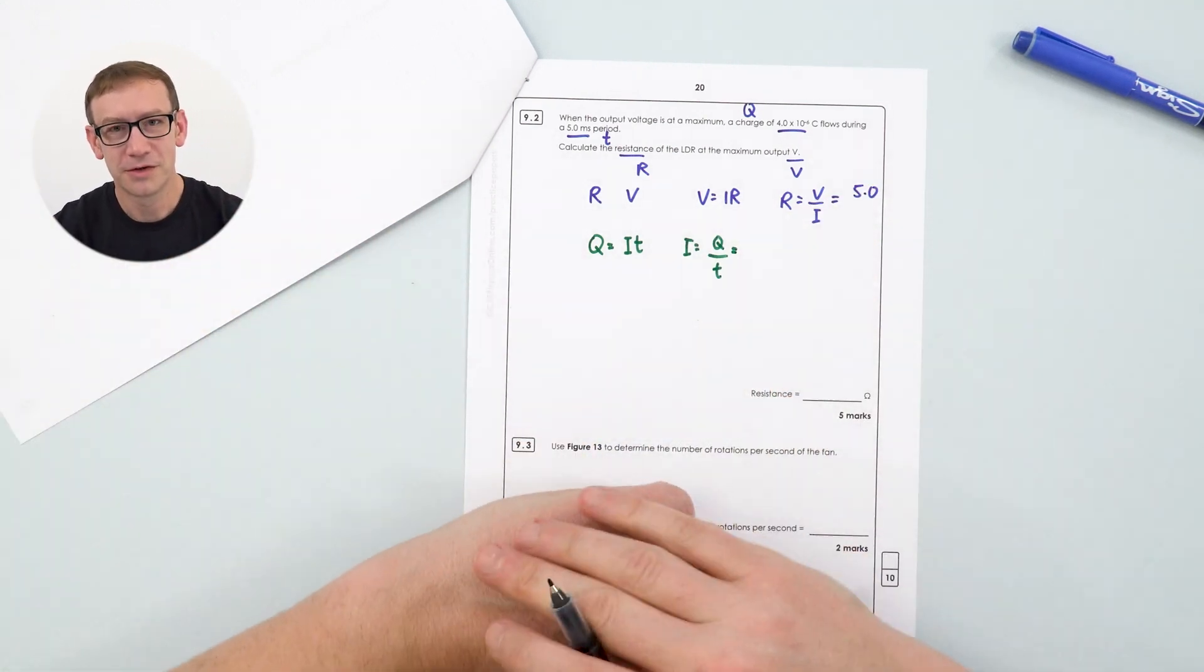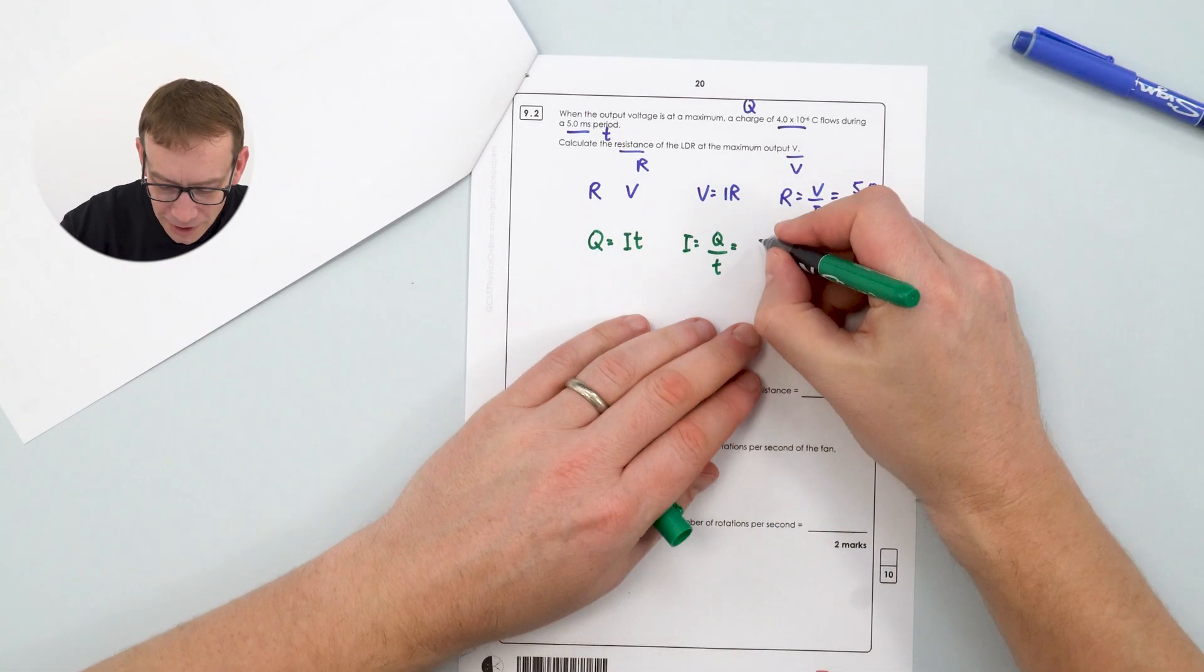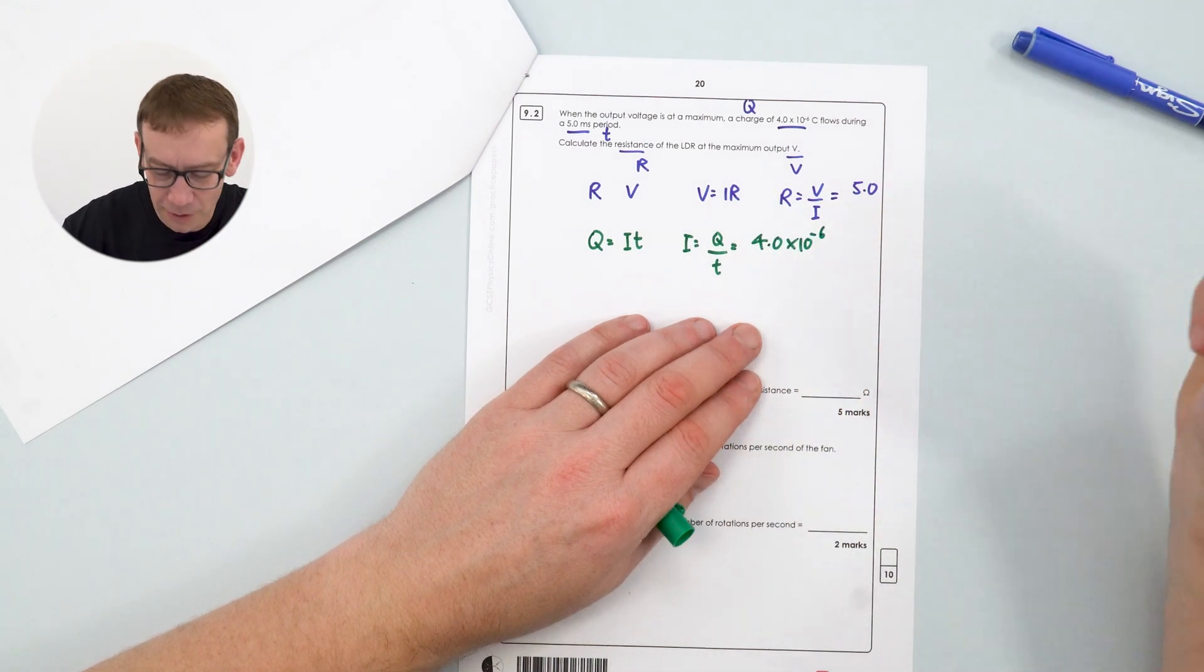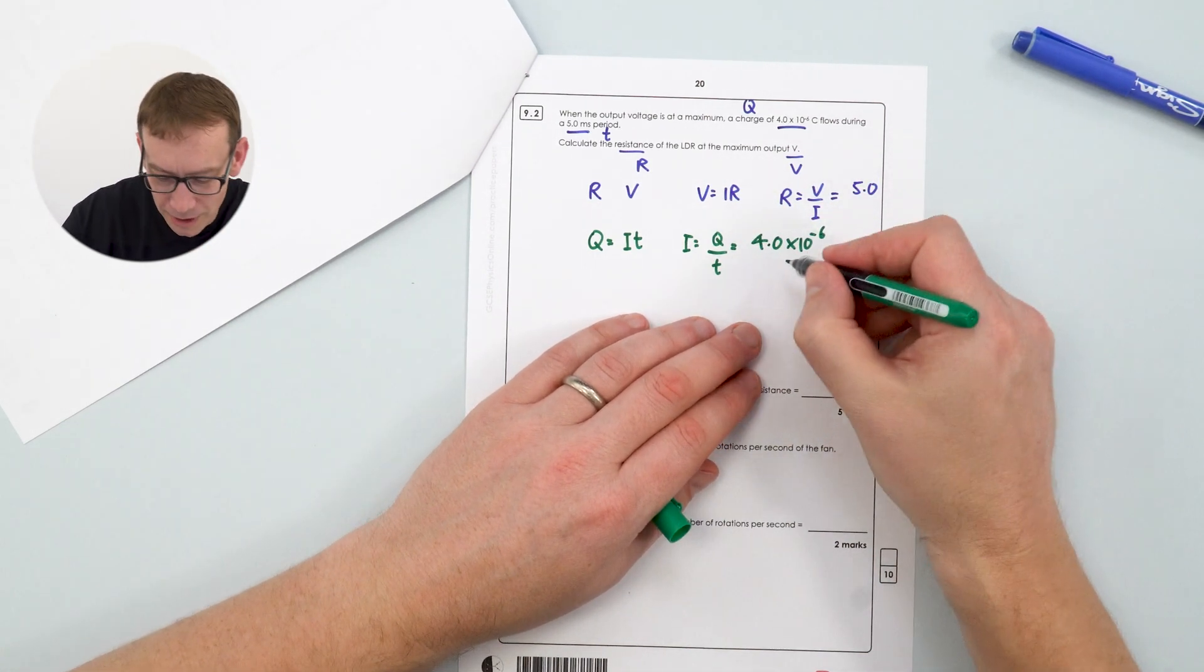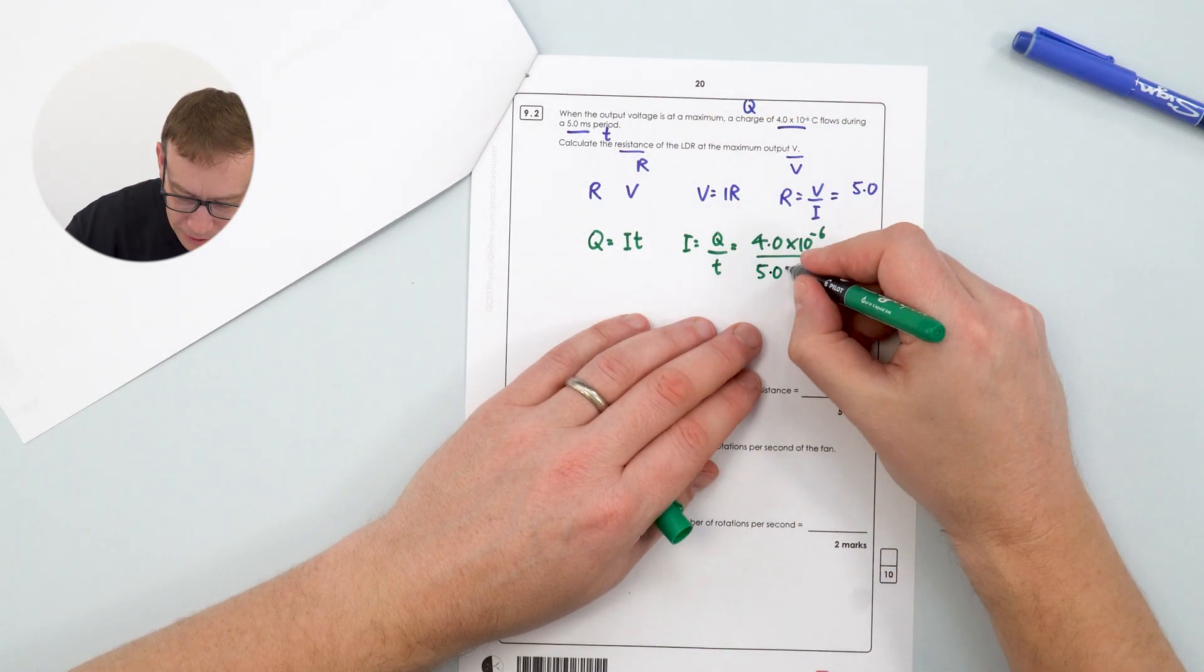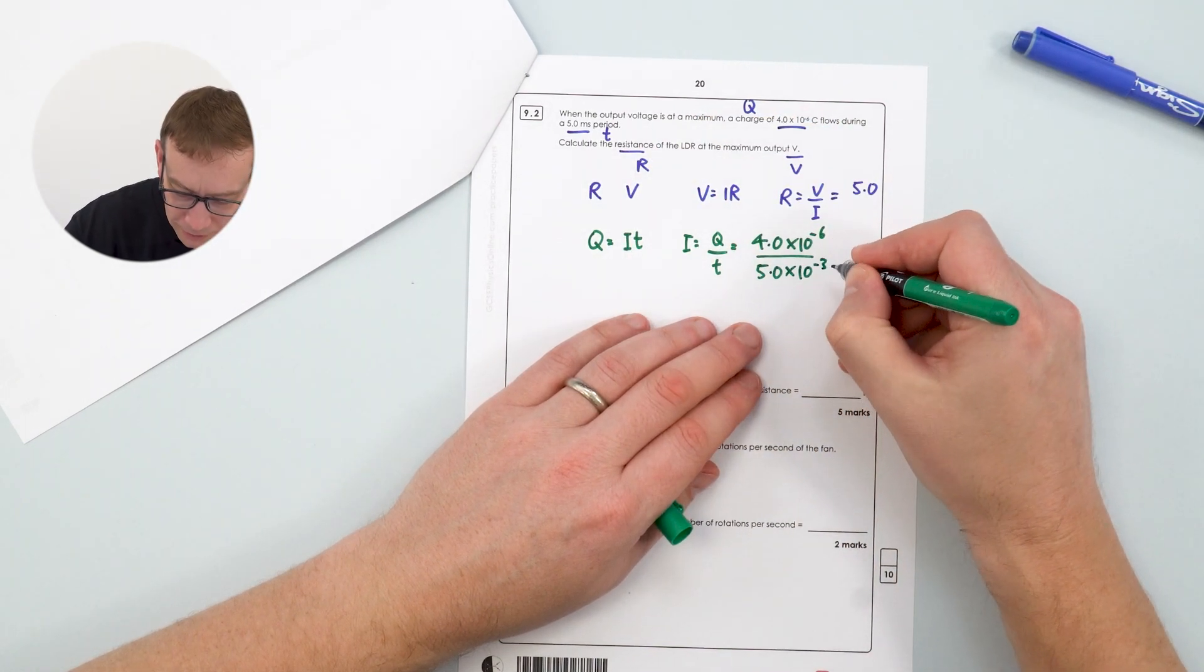Do we know the charge transferred? Well yes, it's given to us in the question. It's 4.0 times 10 to the minus 6 coulombs. Do we know the time? Yes we do, because it's actually 5.0 times 10 to the minus 3.